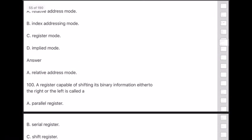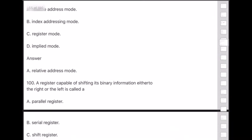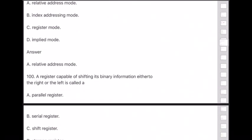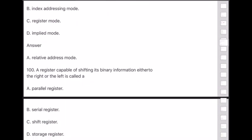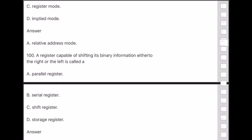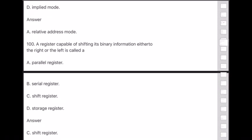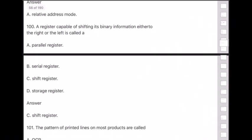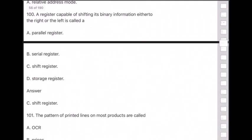Question 100: A register capable of shifting its binary information either to the right or left is called — answer is option C — shift register.